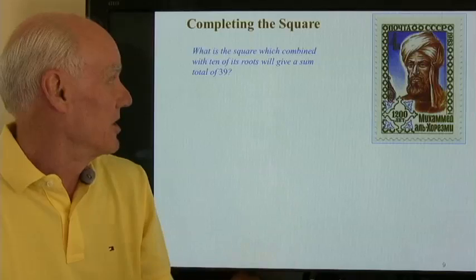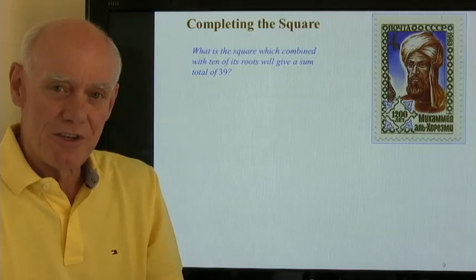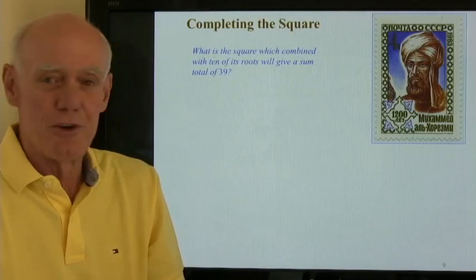So al-Kharizmi says, has this problem in the book. What is the square which combined with 10 of its roots will give a sum total of 39?